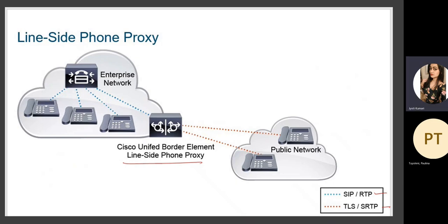Within the enterprise, communication happens via SIP and RTP between end devices, and TLS is used between the enterprise and the public network, with SRTP for secure media between devices.